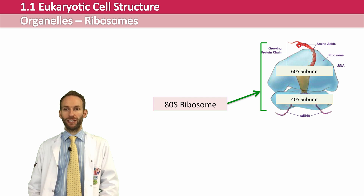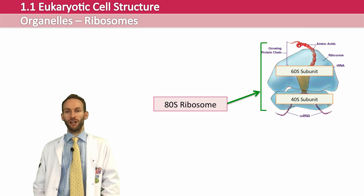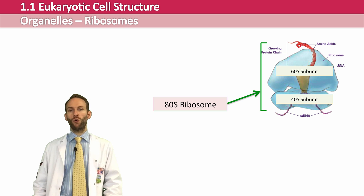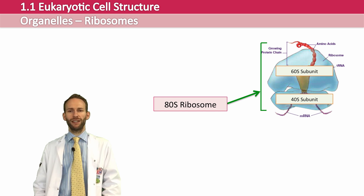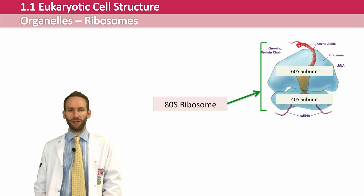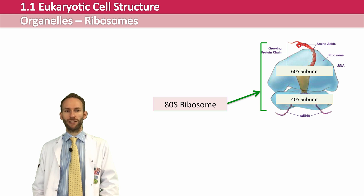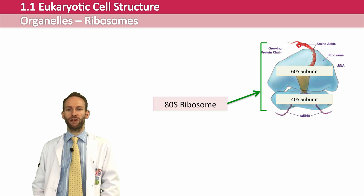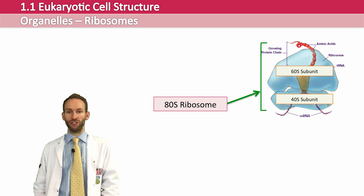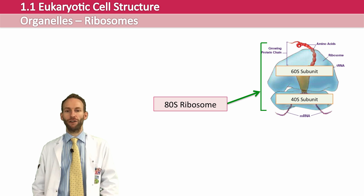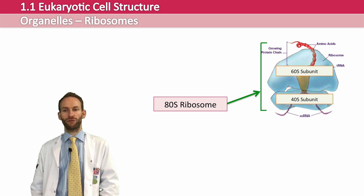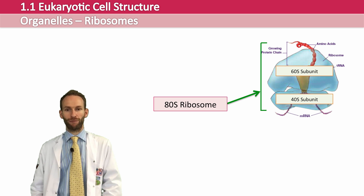Ribosomes can be found in two locations in eukaryotic cells: dotted along the rough endoplasmic reticulum, or floating around inside the cytoplasm. You may be wondering about the subunit numbers — why does a 40S and a 60S subunit make an 80S ribosome, since those numbers don't add up. The S stands for Svedberg units, a measure of how fast they move in a centrifuge — a piece of apparatus that spins molecules very quickly to measure their properties.